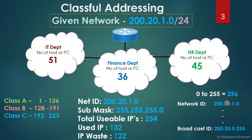From the total 256 IPs, removing the 2 reserved gives 254 usable IPs. When we add up the department requirements — 45, 36, and 51 — that's about 130 IPs used, meaning roughly 120 IPs are wasted using classful addressing.